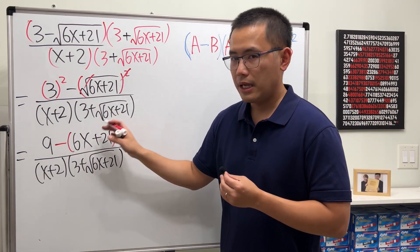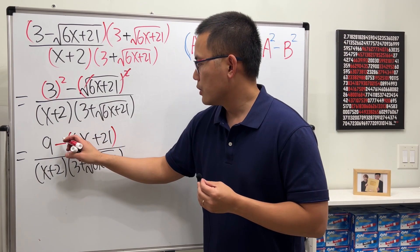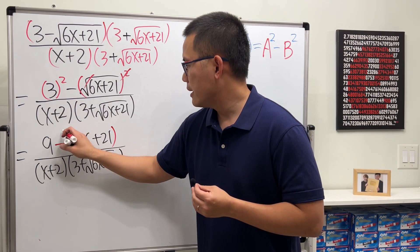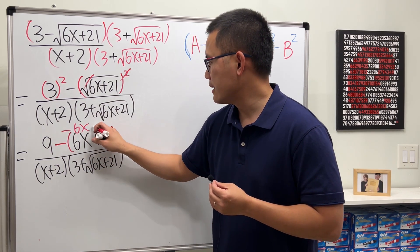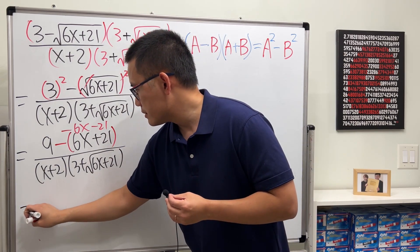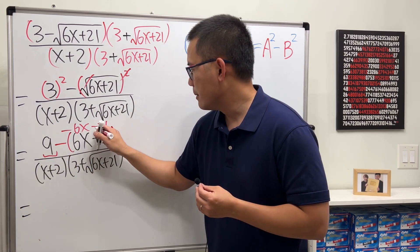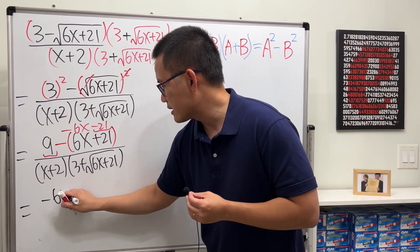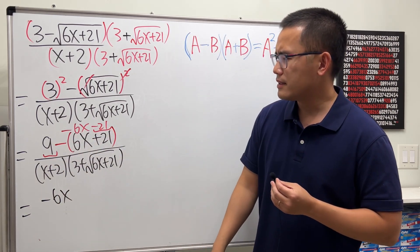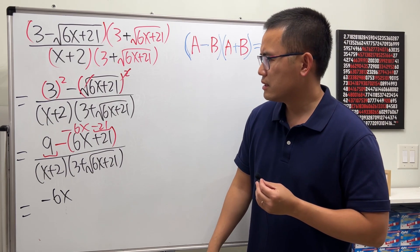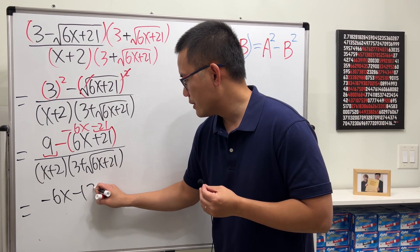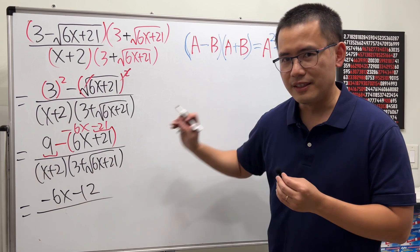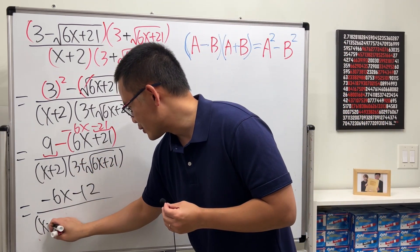Okay, do the algebra on the top. So distribute, we will get 9, and that will be minus 6x and then minus 21. Now 9 minus 21, that is, let me write down down first, that's negative 6x, and minus 21 is minus 12. And then over the same denominator, so let's write it down one more time.